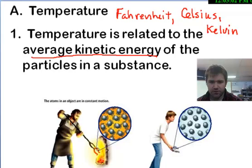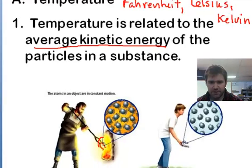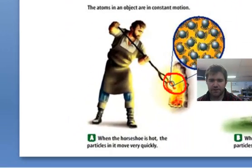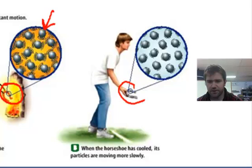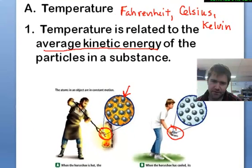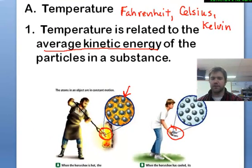So let's take, for example, this horseshoe. We have a horseshoe that is being forged in this picture over here. Its atoms are vibrating very quickly. It's at a very high temperature. And we look at this horseshoe over here. Its atoms are vibrating very slowly. It's at a cool temperature. So the average kinetic energy of these molecules would be a lot higher than this, and this temperature would be higher.